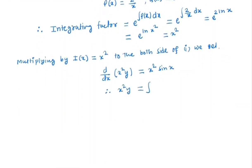So x squared y equals integral x squared sin x dx. Now we need to solve this integral, integral x squared sin x dx. We will solve this by integration by parts method.